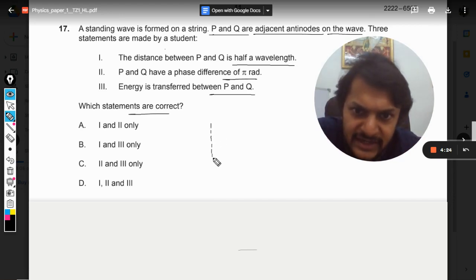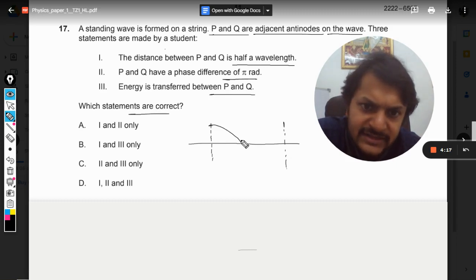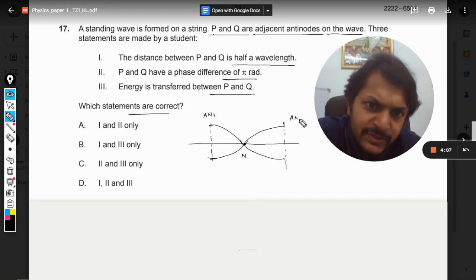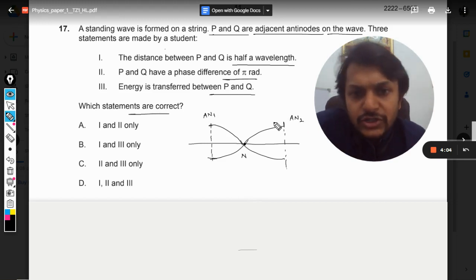The adjacent antinodes they will look somewhat like this. So this will be the first antinode, this will be the node, and this will become the second antinode. Now according to the question, P and Q are the adjacent antinodes. So this is the diagram and this is the node.